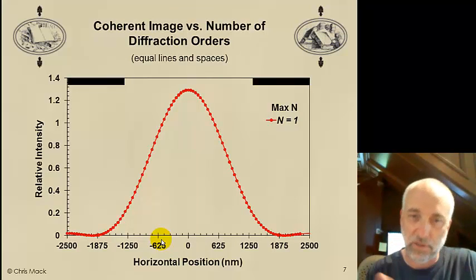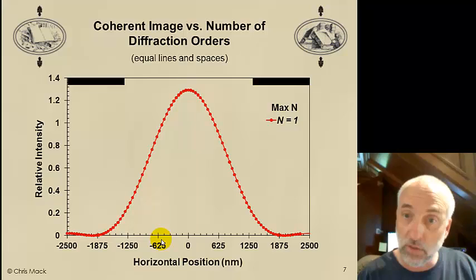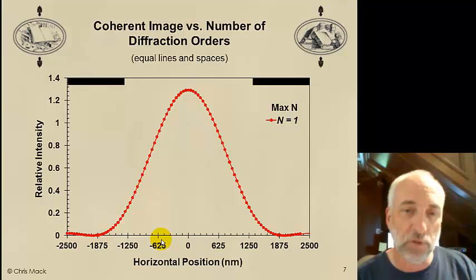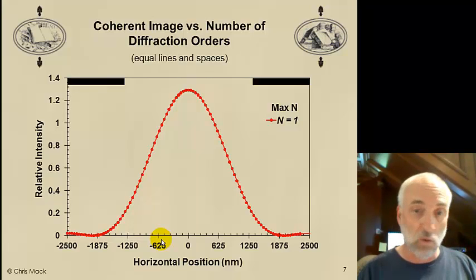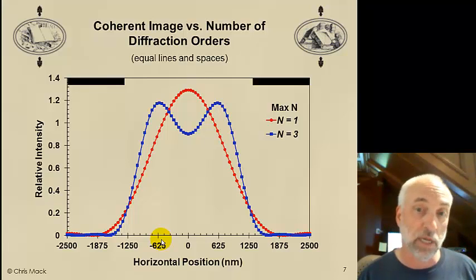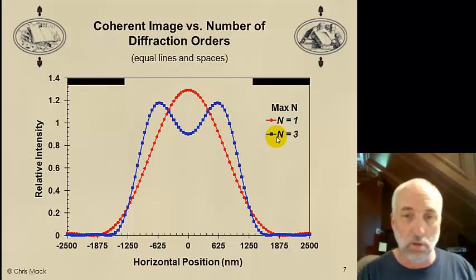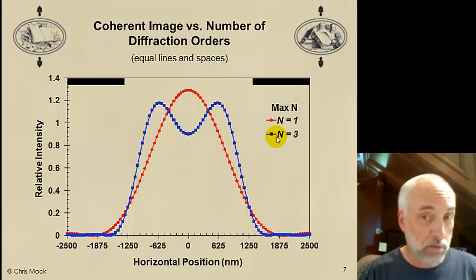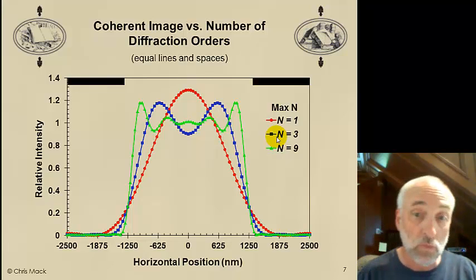That is a picture of one period of the line space patterns when the maximum diffracted order going through the lens is n equal to 1. In other words, I get the 0 and the plus and minus first diffracted order through the lens. Well, you might ask yourself what would happen if I had a bigger lens that I could capture more diffracted orders. Well, if I make the lens bigger and I capture out to n equal to 3, this is what the image looks like. What if I had an even bigger lens? I capture more diffracted orders and if I could capture all that way out to the n equal to 9 diffracted order I will get this image.